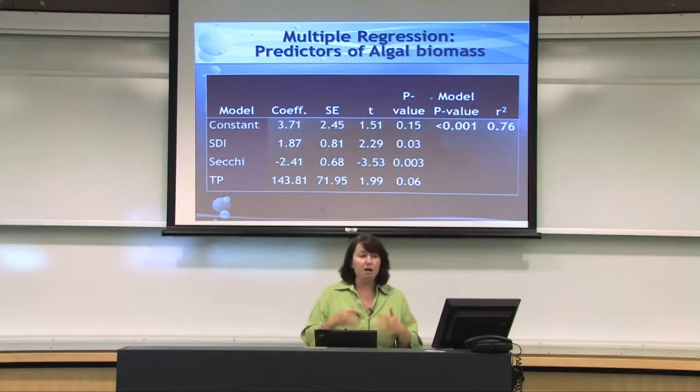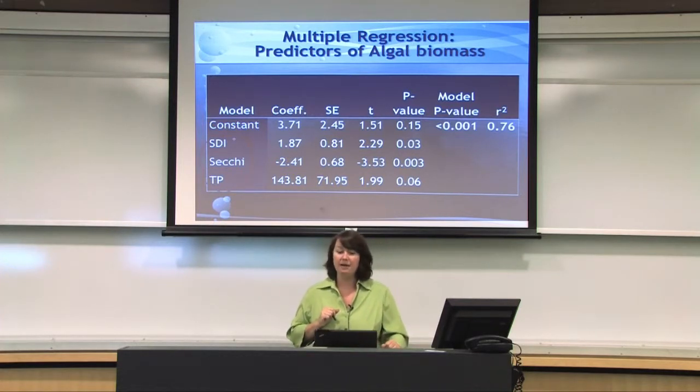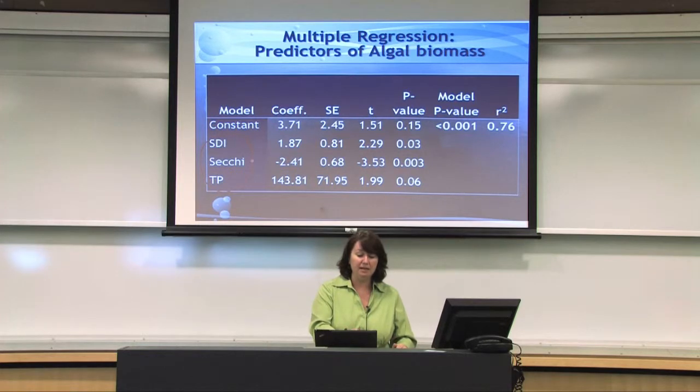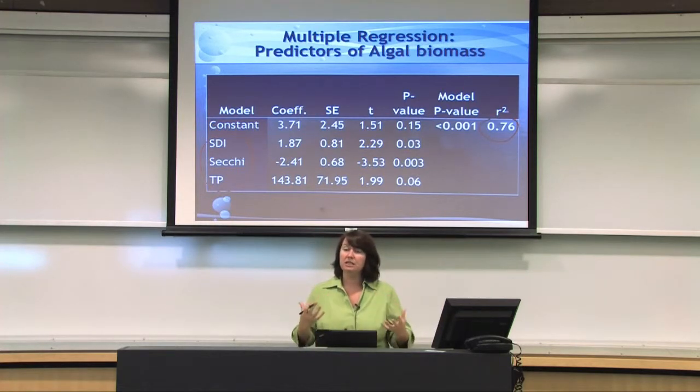To test valid statistical relationships between water quality variables and algal biomass based on chlorophyll A, we looked at all water quality parameters. We found that in a multiple regression, shoreline development index, Secchi depth, and total phosphorus together have an additive effect — and we can explain 76% of the variation in algal biomass. This indicates that shoreline development intensity, light availability, and nutrient availability are all important in explaining algal amounts in these lakes.